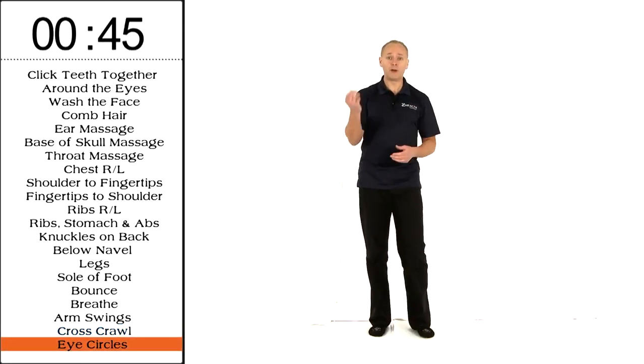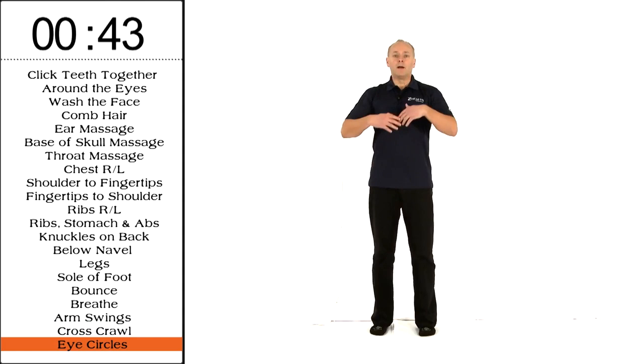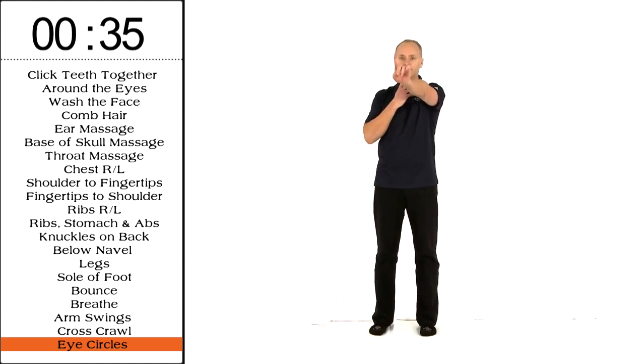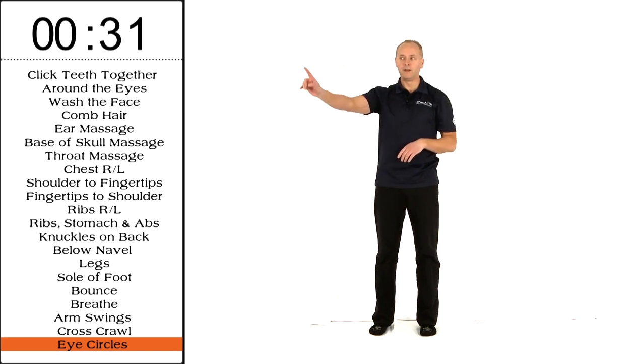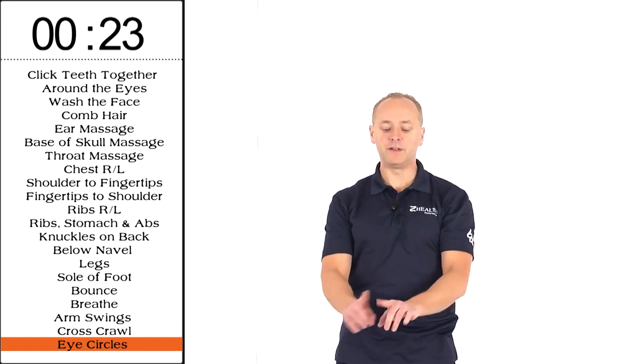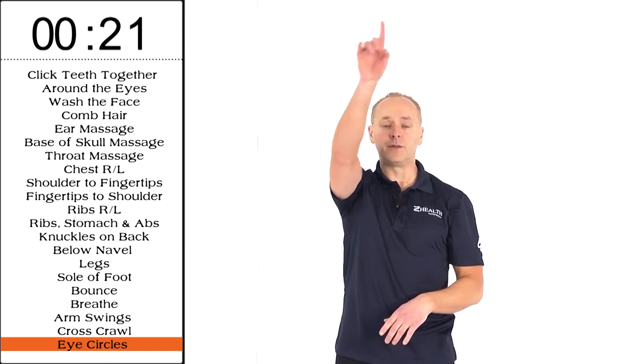Then we're going to finish up the warm-up by working on our eyes briefly. I'm going to have you take your arm out to arm's length. Keep your head still. Focus on your thumb or index finger with your eyes. And then you're going to create some large circles. Now, as you can see, I tend to switch my hands in the middle of the circle...